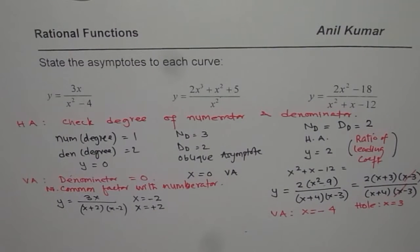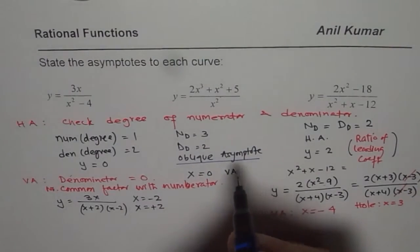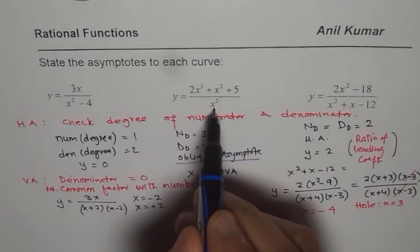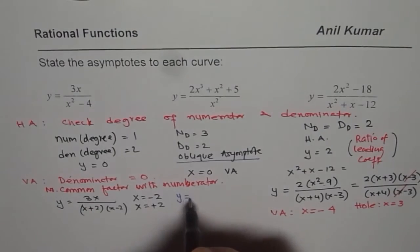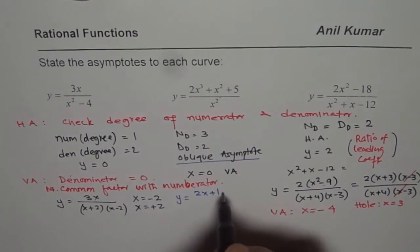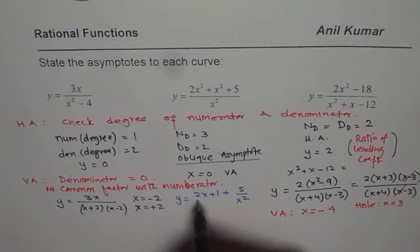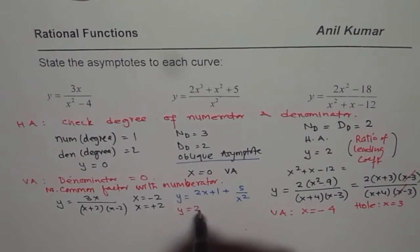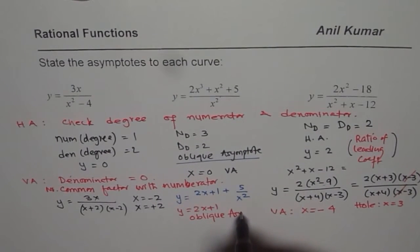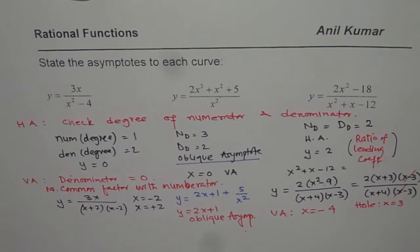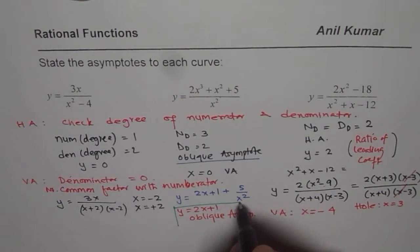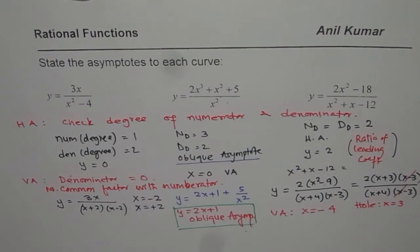We are left with finding the oblique asymptote for the second function. We divide by x squared: y equals to 2x cubed plus x squared plus 5 divided by x squared gives 2x plus 1 plus 5 over x squared. So the oblique asymptote equation is y equals to 2x plus 1. There is no horizontal asymptote in this case.